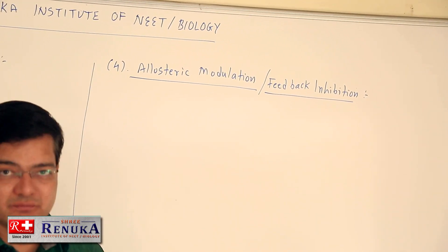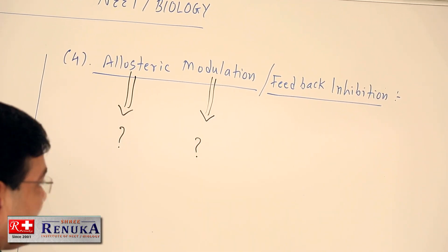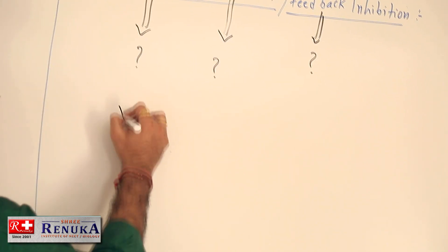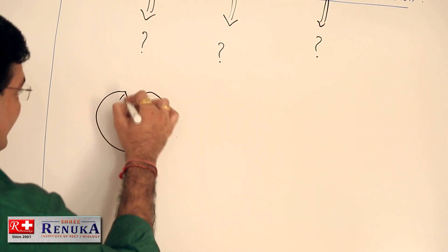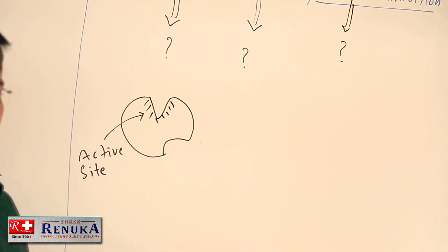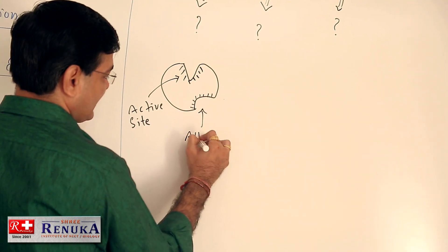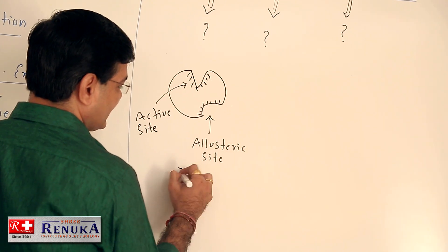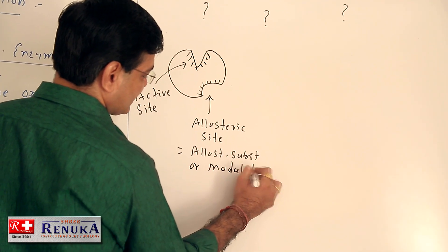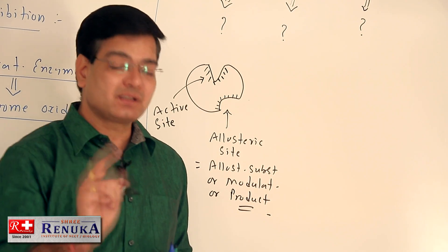The next type is allosteric modulation, also known as feedback inhibition. The enzyme has an active site where the substrate binds, but the enzyme also has another site called the allosteric site. Here, an allosteric substance — also called a modulator — or the product of the process may bind with the allosteric site, which is different from the active site.